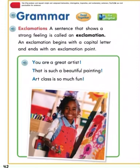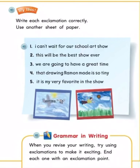Grammar. Exclamations. A sentence that shows a strong feeling is called an exclamation. An exclamation begins with a capital letter and ends with an exclamation point. Examples: 'You are a great artist!' 'That is such a beautiful painting!' 'Art class is so much fun!' Try this — write each exclamation correctly on another sheet of paper: 1. I can't wait for our school art show. 2. This will be the best show ever. 3. We are going to have a great time. 4. That drawing Ramon made is so tiny. 5. It is my very favorite in the show.